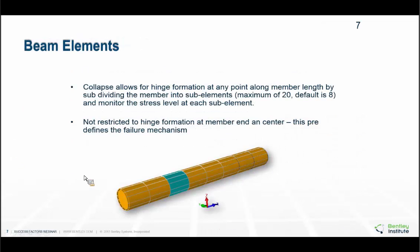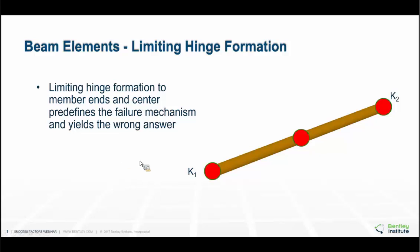How do we allow for hinge formation anywhere along the member length? In Collapse, we subdivide the member into eight sub-segments by default, and we can go up to 20. We monitor the stress level at each sub-element as we increase the load of the structure. Hinges are not restricted to the member ends or the center — if you limit hinge development at the ends and center, you are basically pre-defining the failure mechanism.